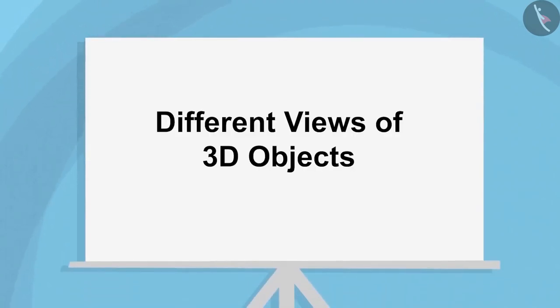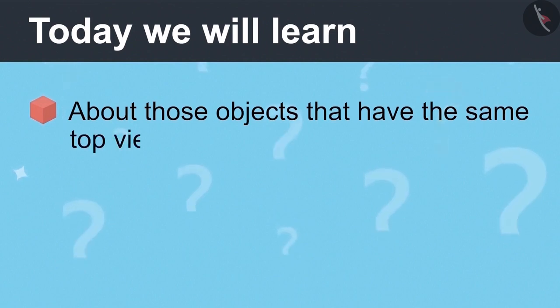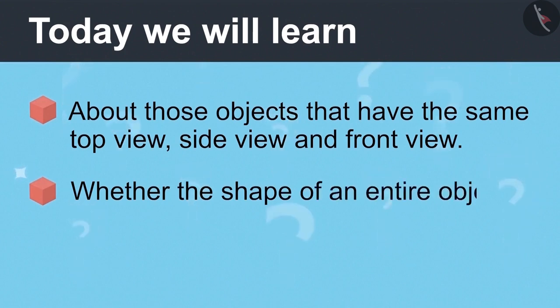Different views of 3D objects, part 3. Today we will learn about those objects that have the same top view, side view and front view, and whether the shape of an entire object can be determined from just three views.